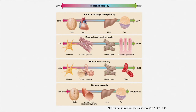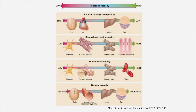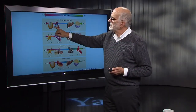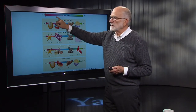If we look at the ability of tissues to tolerate infection, what we see is a quite wide range of damage susceptibility. If a tissue has a high intrinsic susceptibility to damage — like brain and heart — it has a low capacity for toleration.